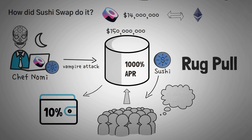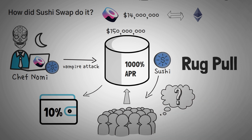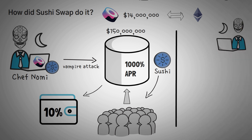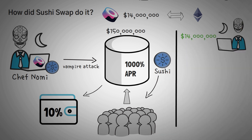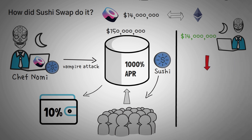It looked like a rug pull, and it basically was. At this point it was actually one of the largest trading protocols available at the time, so everyone was confused — was it a rug pull? What was he going to do with the money? So that answers the question: he created it anonymously and worked really hard to make it big so that he could have a $14 million payday, which when he cashed out, crashed the price of SUSHI by 73%.